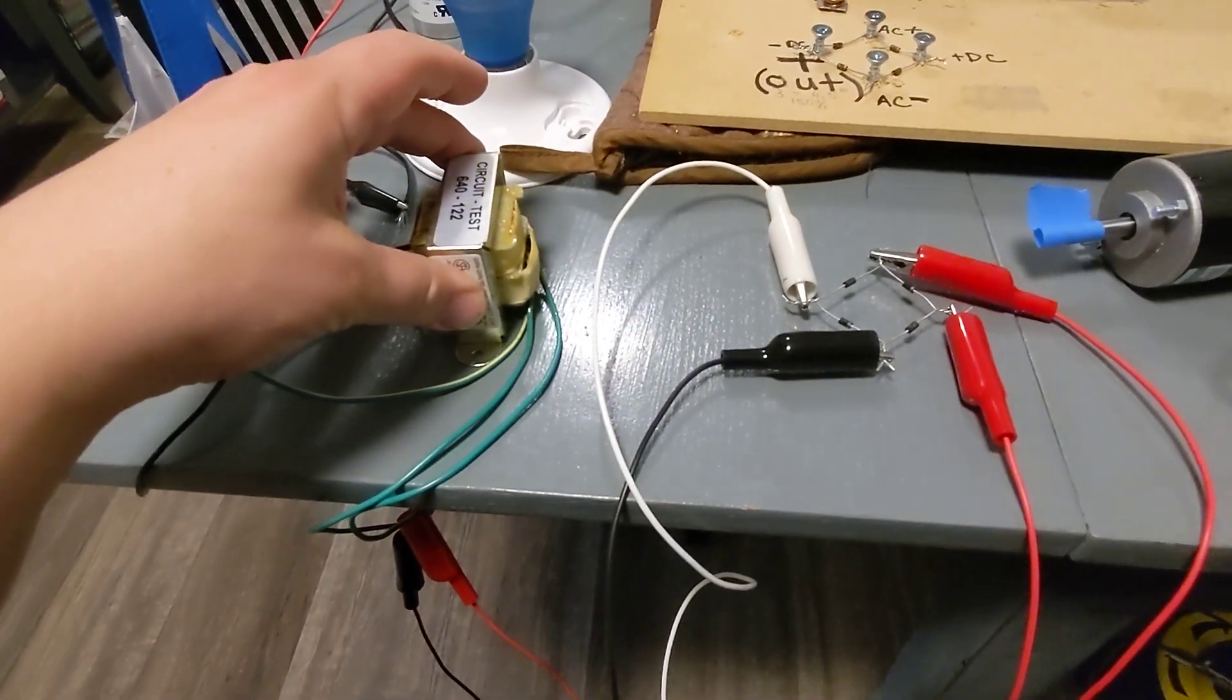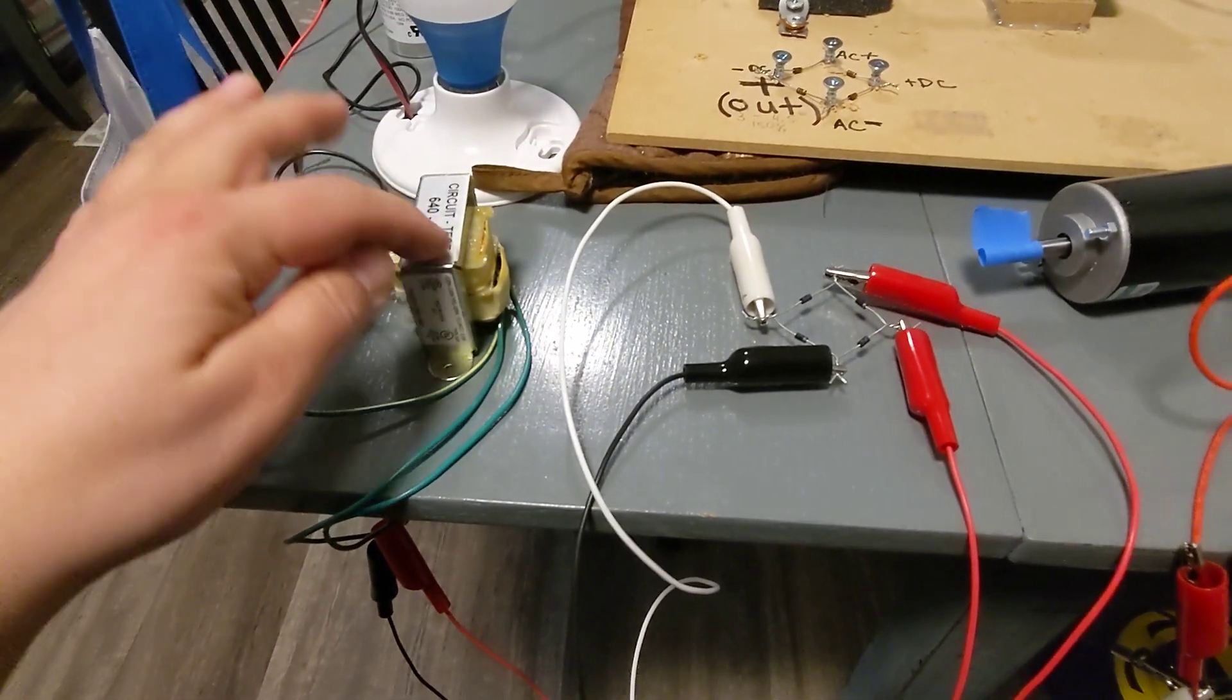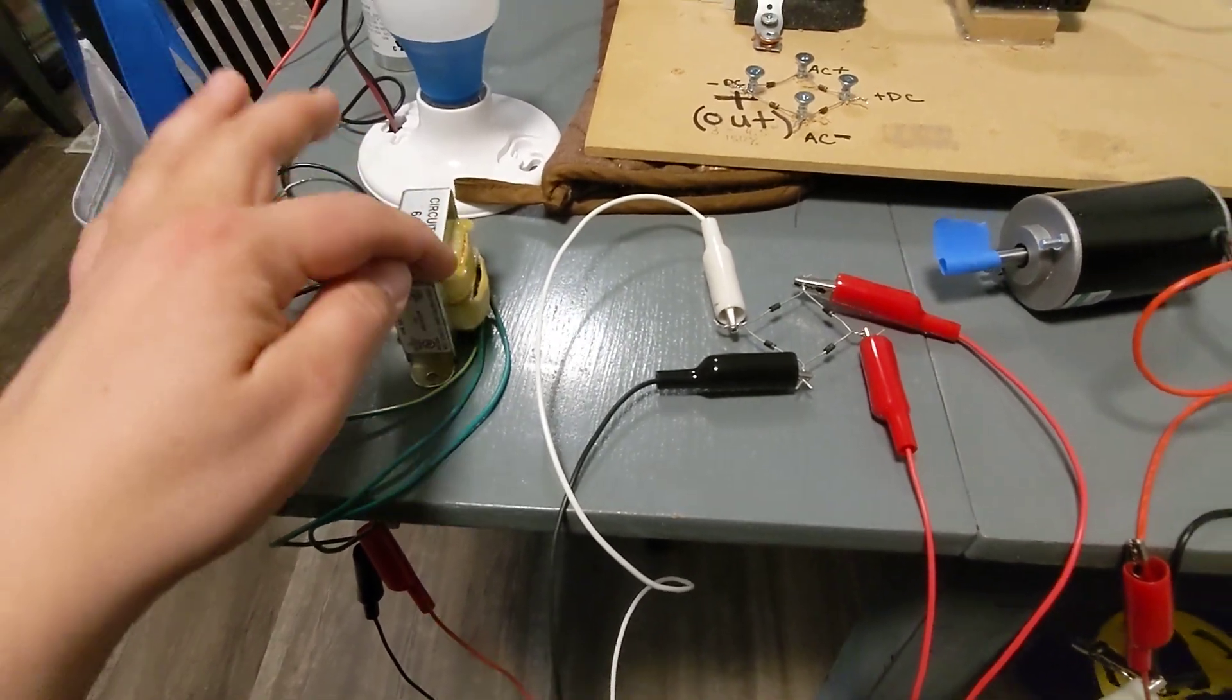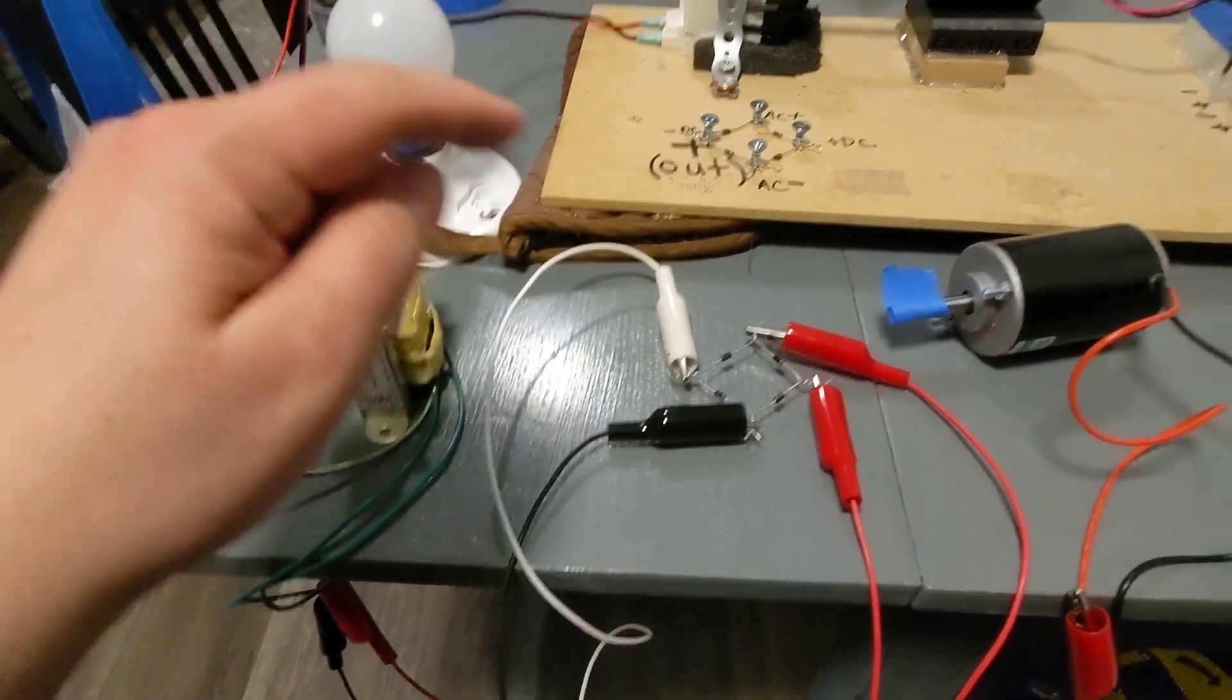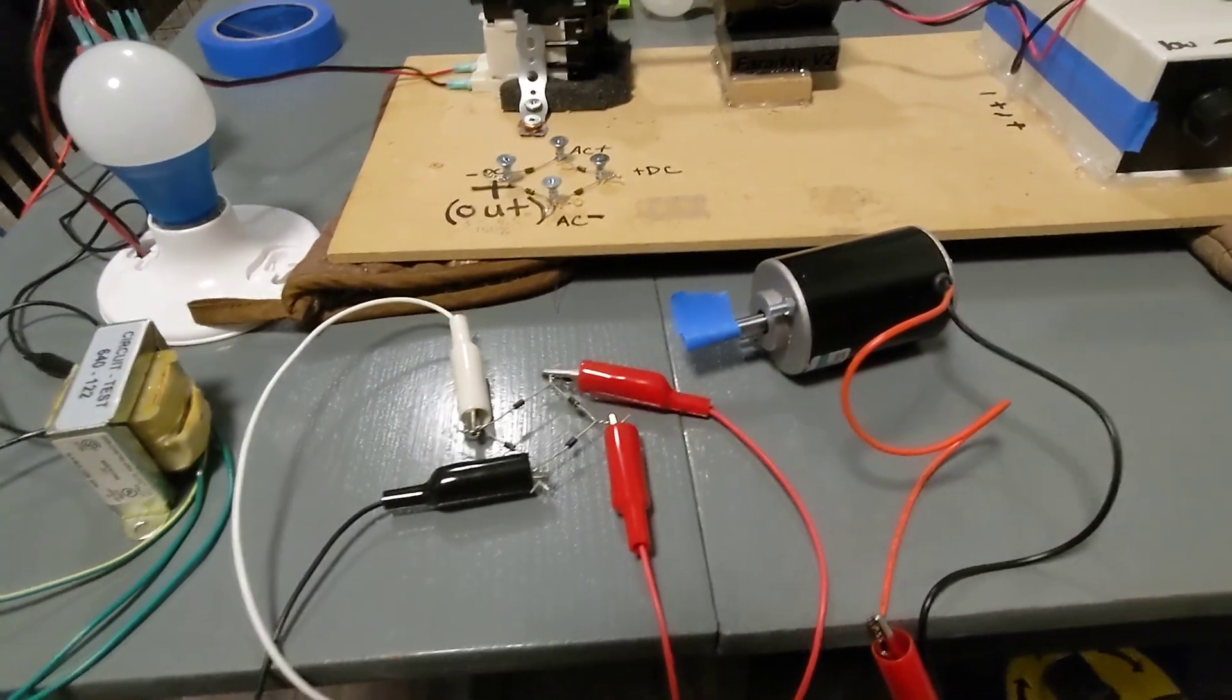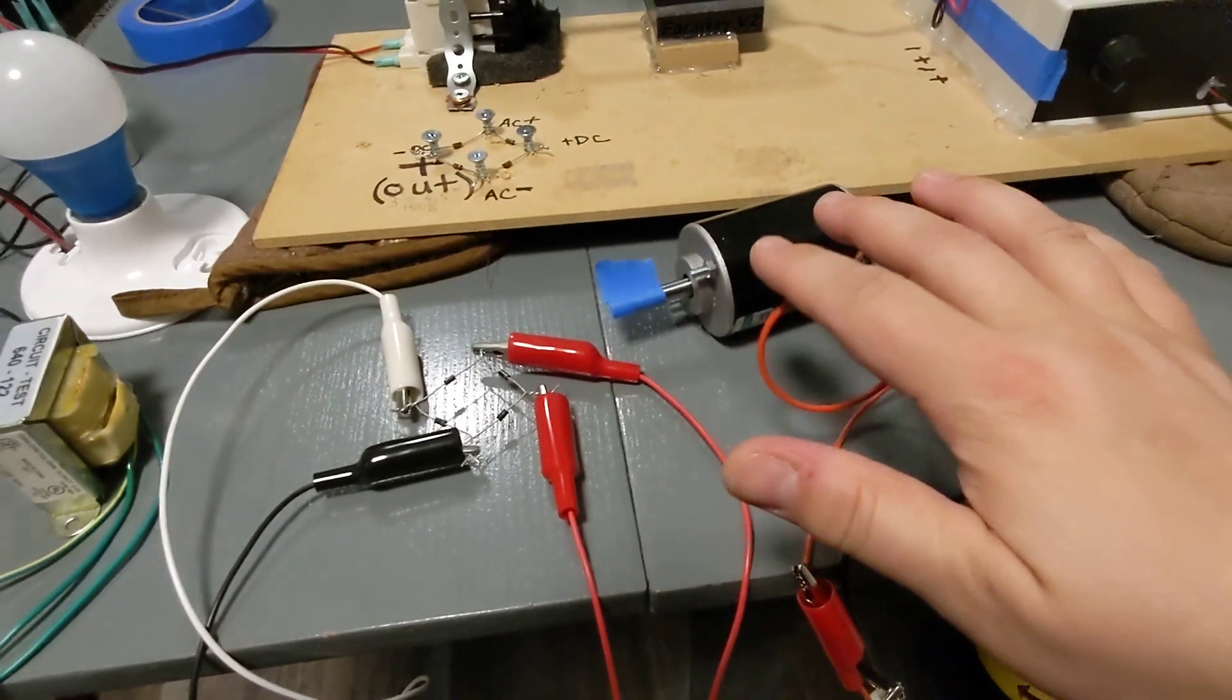I'm experimenting with some different types of transformers. This one's obviously a step down transformer. So you're going 115 down to 12 volts AC. When you rectify into DC, it becomes six volts DC. So this motor isn't getting full power, but it is running.